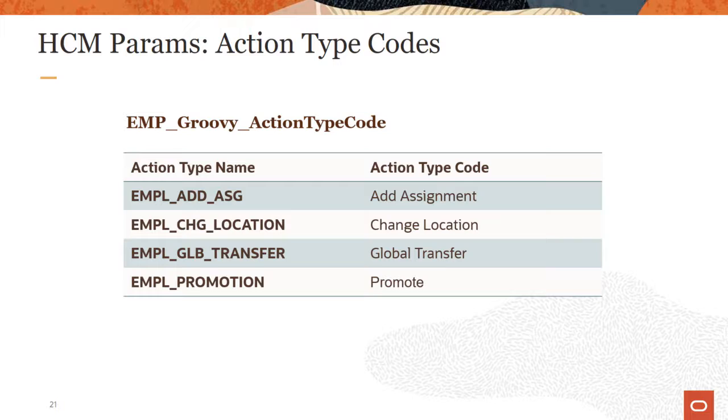Here are some of the action type codes for the emp Groovy action type code HCM params value. Use this HCM param only for objects where you cannot access the when and why object directly or indirectly to get the action type code. For a complete list of action type codes see the autocomplete rules documentation which is available on the Oracle Help Center.